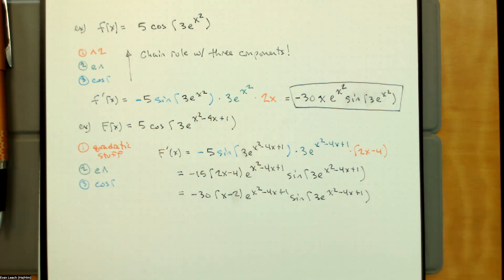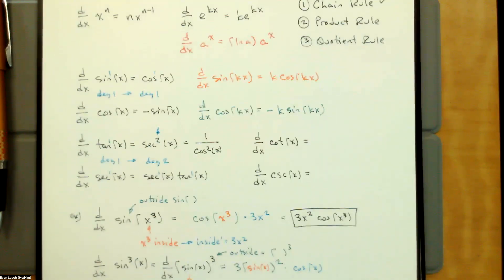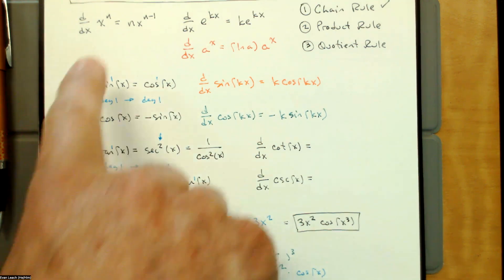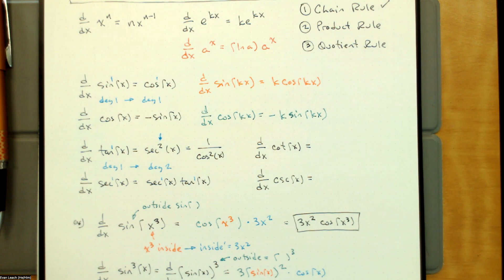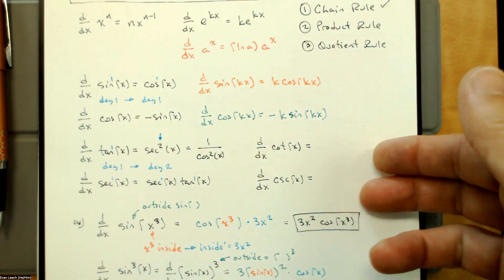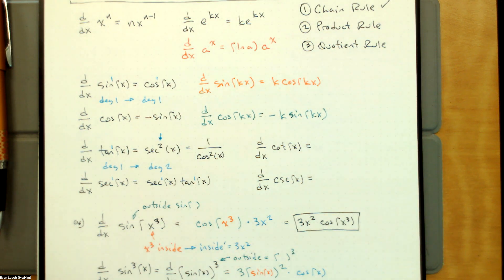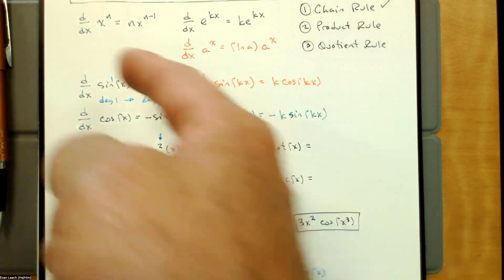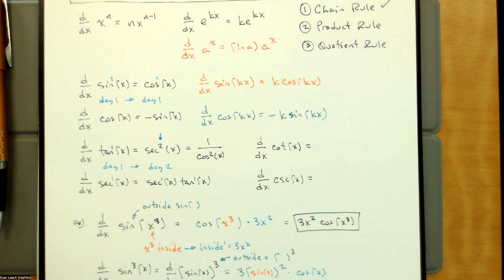Alright, so we did some stacked chain rule today and learned more basic derivatives. We now have six base derivatives total — plus two bonus ones for cotangent and cosecant that are like DVD bonus material; don't worry about those too much. But these six you've got to know from now until forever. That's it for today — see you all tomorrow, everybody have a good day and thanks for playing.